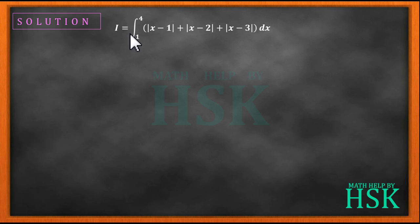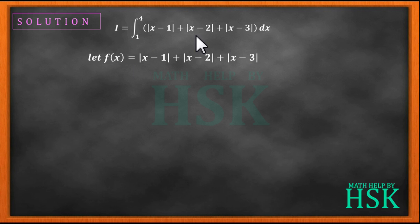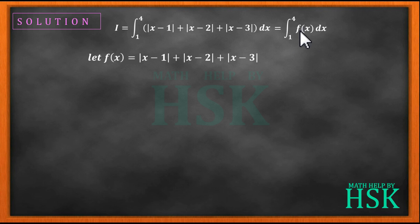To begin solving, I have assumed the given definite integral as equal to I, and the function which we have to integrate as equal to f. So I can write f(x) is equal to modulus of x minus 1 plus modulus of x minus 2 plus modulus of x minus 3. I can write the value of I as equal to the integral of f(x) dx from 1 to 4, so I don't have to write this value again and again.